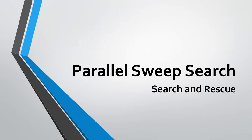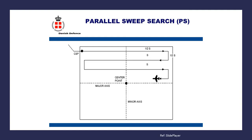How is the parallel sweep search carried out in a search and rescue operation? The first diagram shows the parallel sweep search conducted by an aircraft with one vessel. A point known as the CSP is mentioned, which means the Commence Search Point — that is the point from which the search commences.